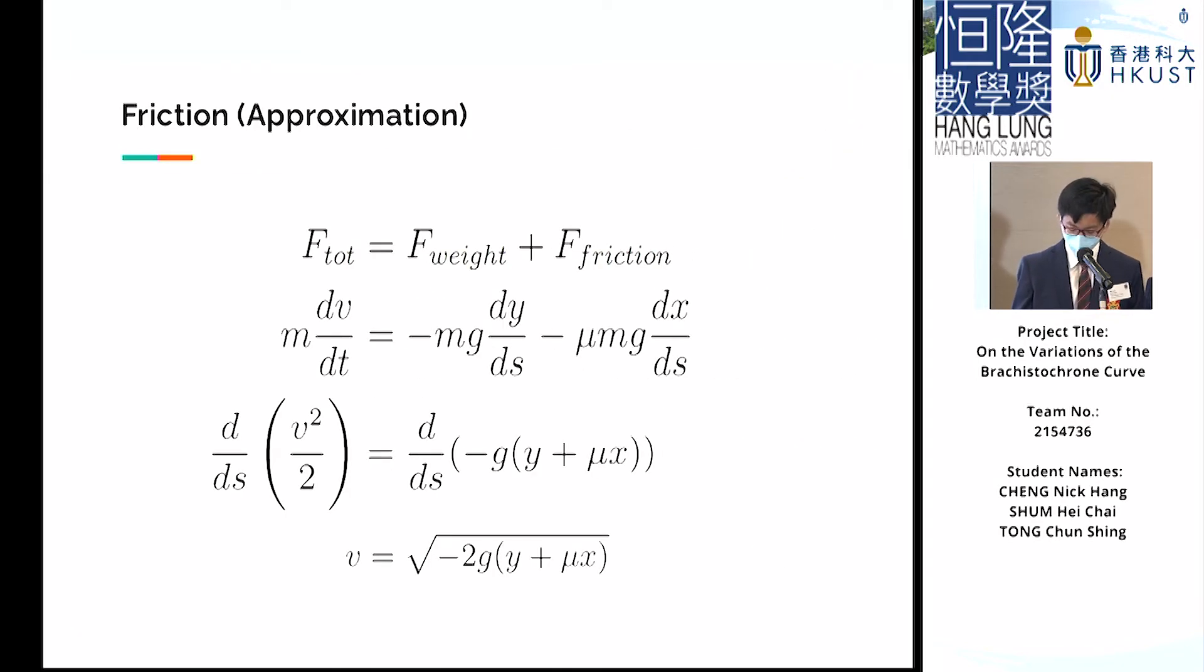Using those expressions, we resolve the forces acting on the object along the direction of motion. Then we obtain the velocity in terms of position, v = √(-2g(y + μx)), where μ is the coefficient of friction.